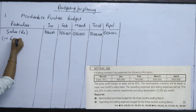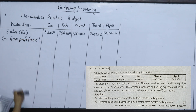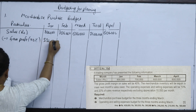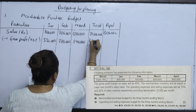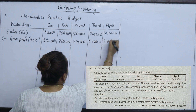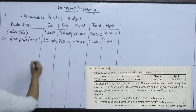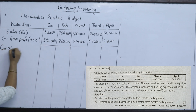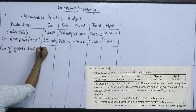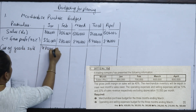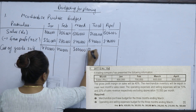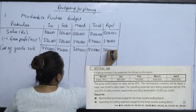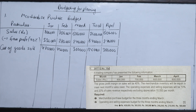Gross profit margin is 40% of sales. So for January: 8 lakhs × 40% = 3,20,000. Cost of goods sold for January is 4,80,000; February is 4,20,000; March is 3,60,000; and April is 3,60,000.